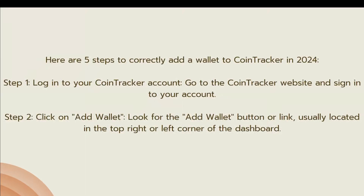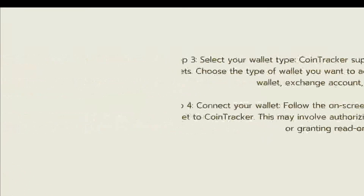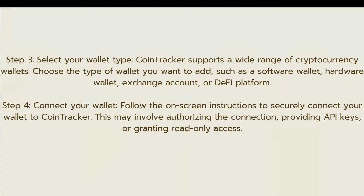The first step is to log into your CoinTracker account. Go to the CoinTracker website and sign into your account. The next step is to click on 'Add Wallet.' Look for the add wallet button or link, usually located in the top right or left corner of the dashboard. The third step is to select your wallet type.